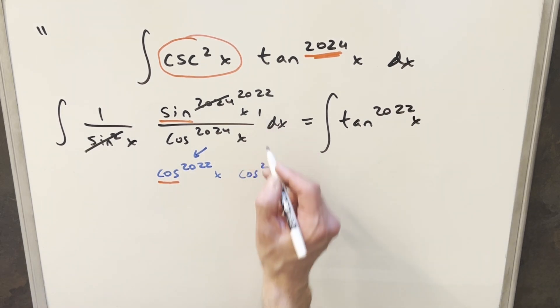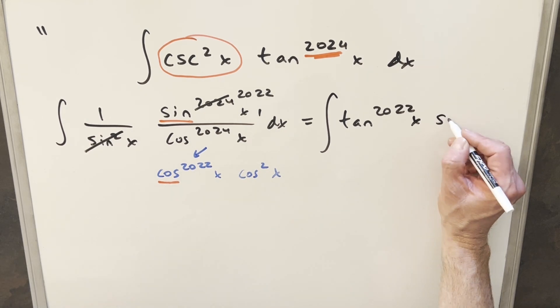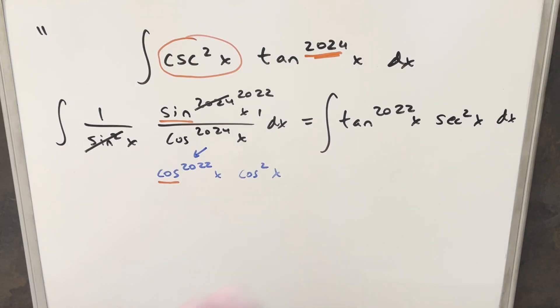And then here we just have this 1 over cosine squared x, but 1 over cosine squared x I can write as secant squared x. And so what just happened is we fixed this problem here, and now we've got our secant squared x.